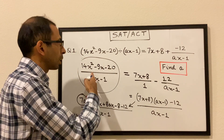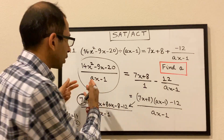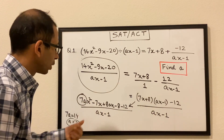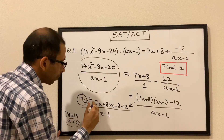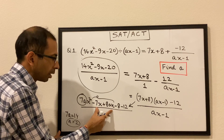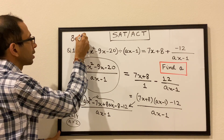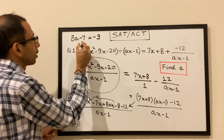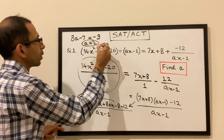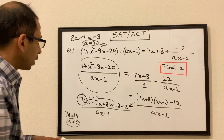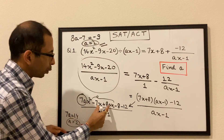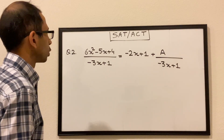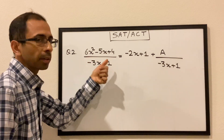Just to reiterate: we made both sides have the same denominator, then equated the numerators term by term. We can verify using the x term too — its coefficient is 8a minus 7, which must equal minus 9, and that also gives a equals 2. Either way we get the same answer. Now let's go to question number two: 6x² minus 5x plus 4 divided by minus 3x plus 1.